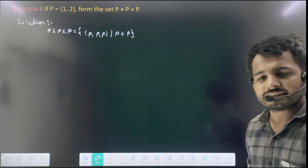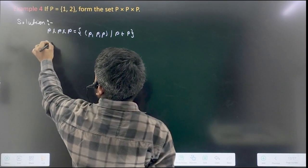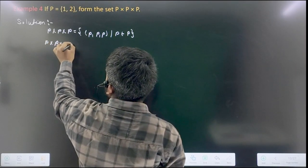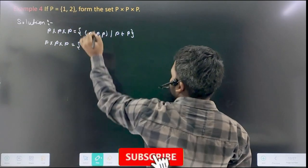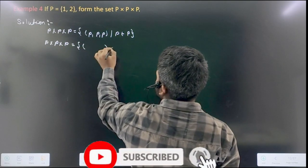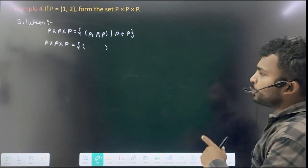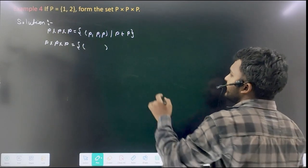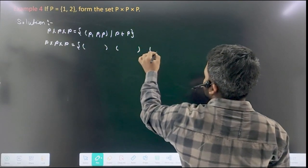So you should know that there are... so how do we write this? You can see that P × P × P, you should know that how many elements here: 2 × 2 × 2 = 8.